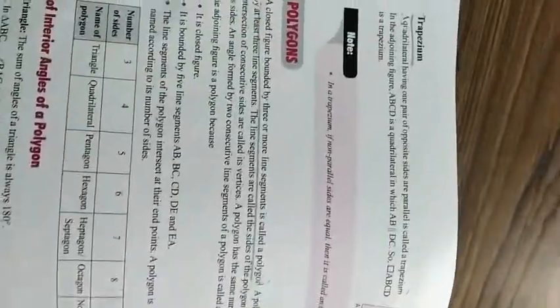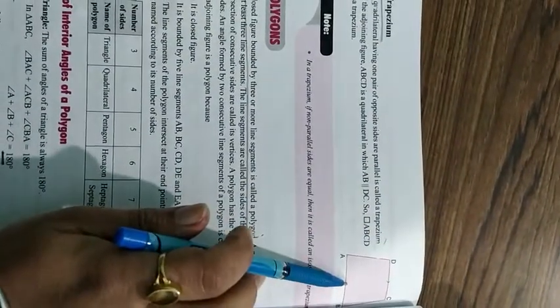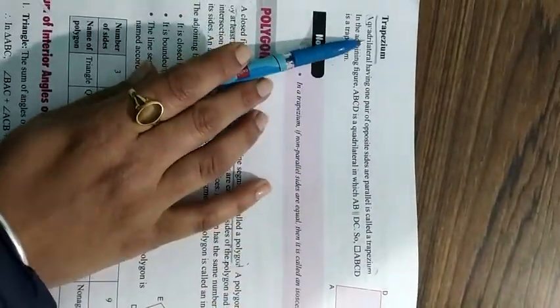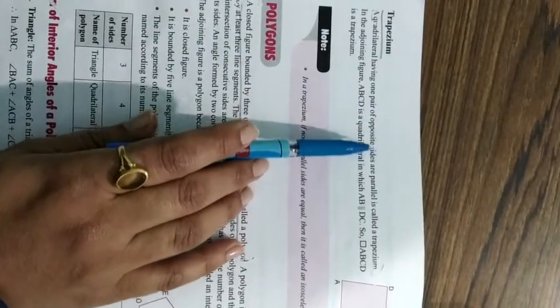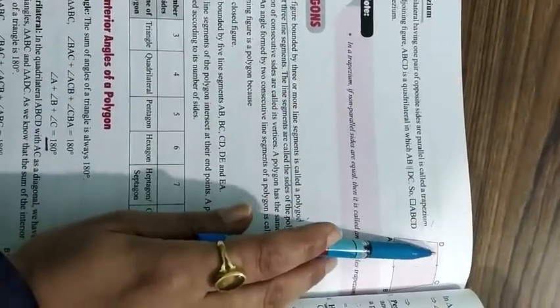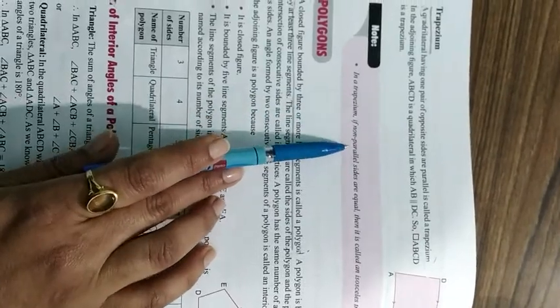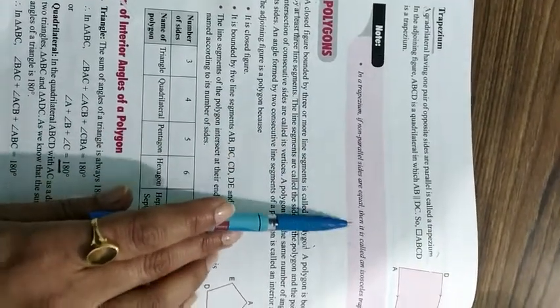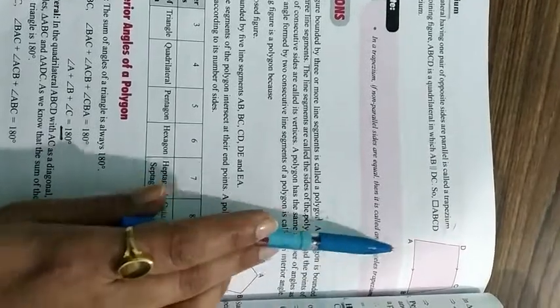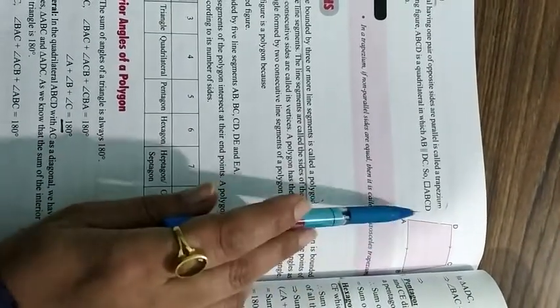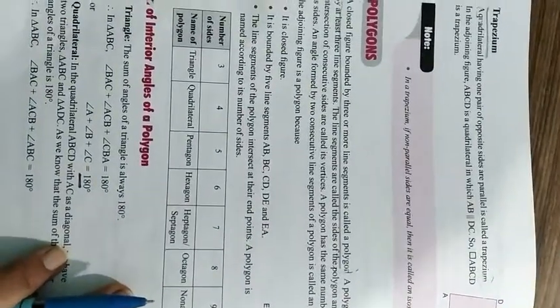Next quadrilateral is a trapezium. In a trapezium, only one pair of opposite sides is parallel; the other side is non-parallel. If the non-parallel sides are equal in length, then it is called an isosceles trapezium.